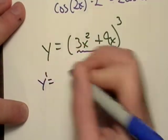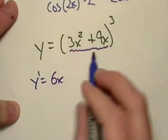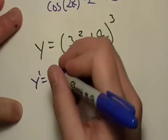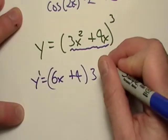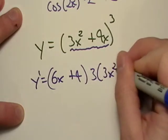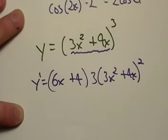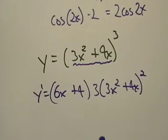So I'm going to go y prime, and I'm going to go 6x, that's just derivative there, plus 4. And that's multiplied by the derivative of the whole thing, which is 3, 3x squared plus 4x to the second. Now, in the back of your book, at least in the back of my book, these guys would always, the mathematician guys would always put the answer in some weird form.